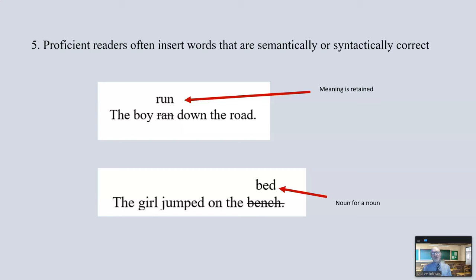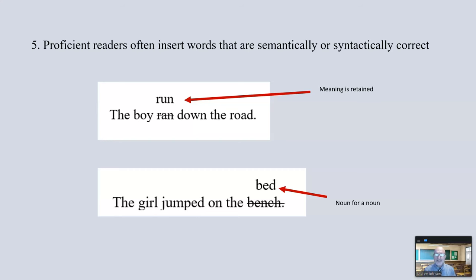Proficient readers often insert words that are semantically or syntactically correct. Semantically means they make sense within the sentence and meaning is retained. If they are still creating meaning at a deep level, they're inserting words that still make sense. They also often put in words that make sense grammatically, where meaning is not retained but it's grammatically correct. These are just some of the clues that tell us we use more than letter sounds — more than phonics — to recognize words. We also use syntax and semantics.